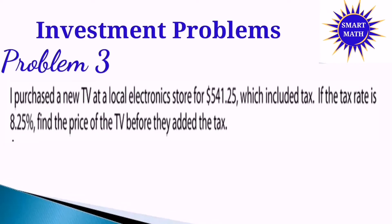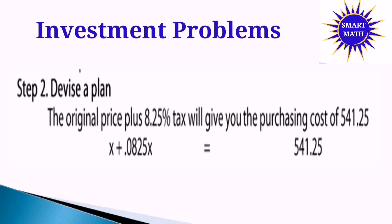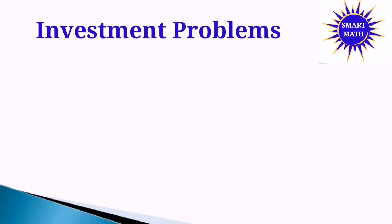Now let's go to an investment problem. Problem number 3: I purchased a TV at a local electronic store for about $541.25, which included tax. If the tax rate is 8.25%, find the price of the TV before tax was added. Step 1: Understand the problem. Let X equal the price of the TV before tax. Step 2: Devise a plan. The original price plus 8.25% tax equals $541.25. In mathematical equation: X + 0.0825X = $541.25.